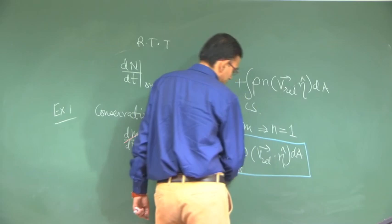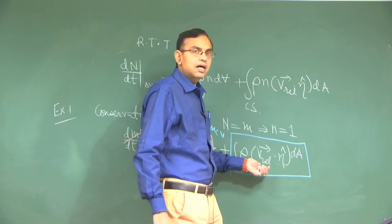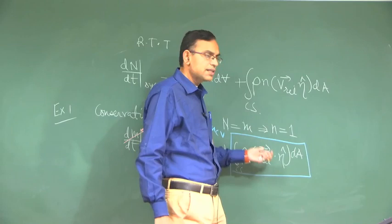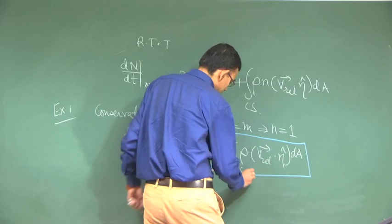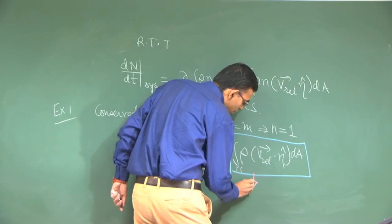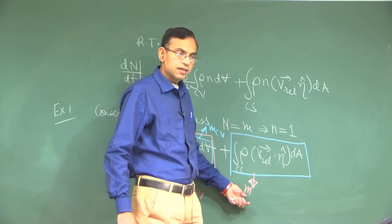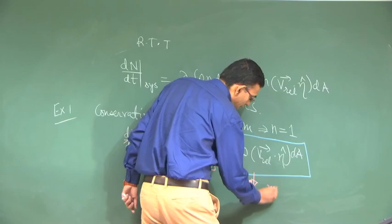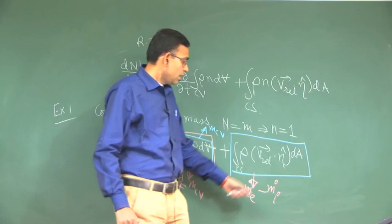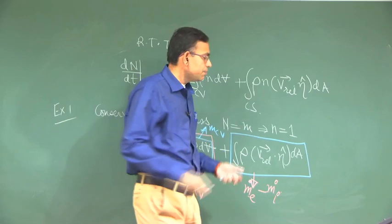Recall the derivation of the Reynolds transport theorem — it was outflow minus inflow of the property. Here the property is mass. So this is m-dot outflow; m-dot is mass flow rate with units of kg per second. So it is m-dot-e minus m-dot-i, where e is for exit and i is for inlet.